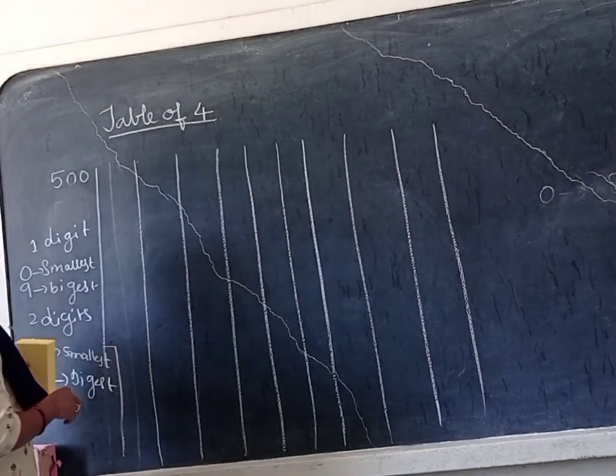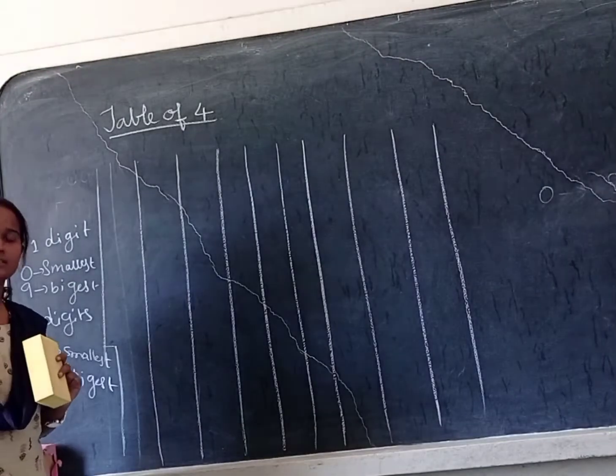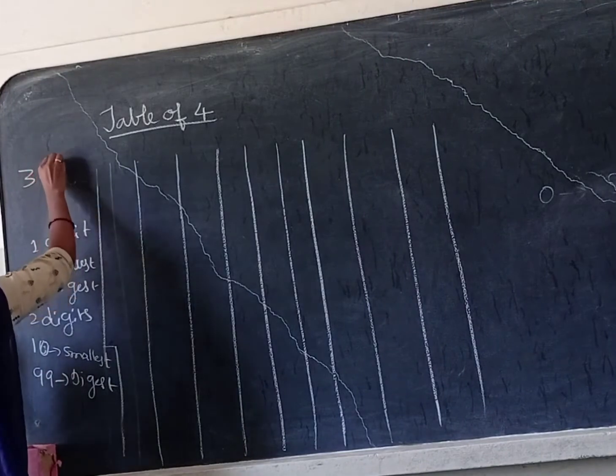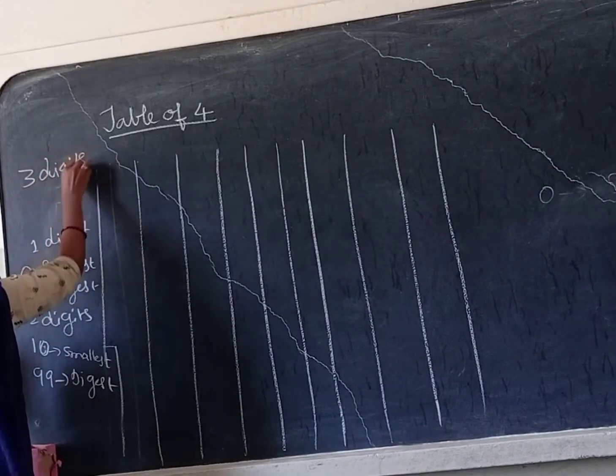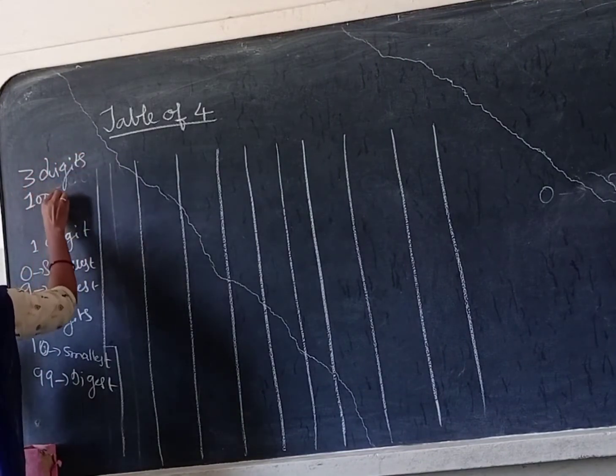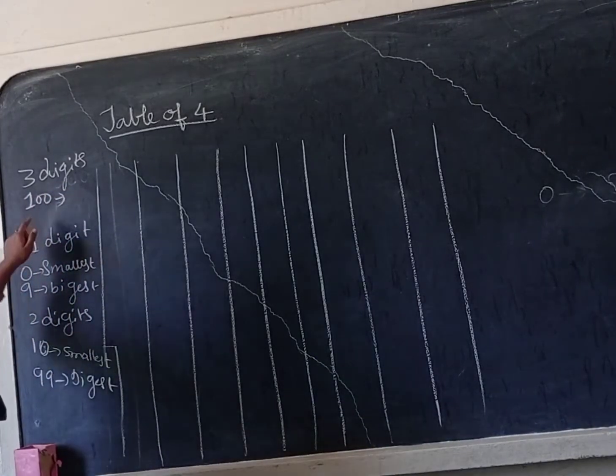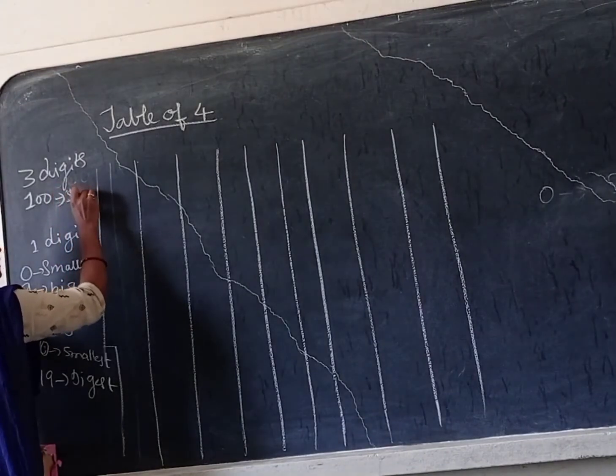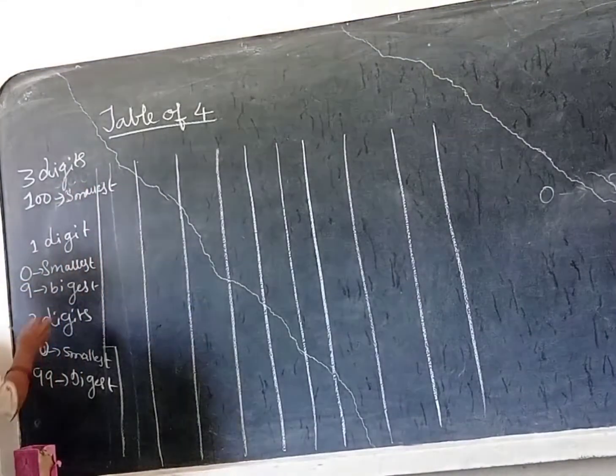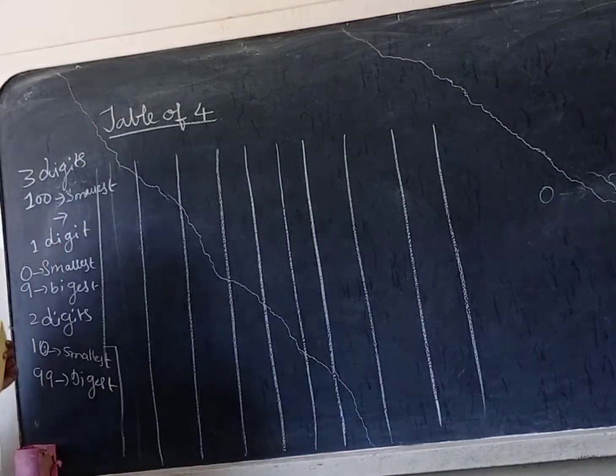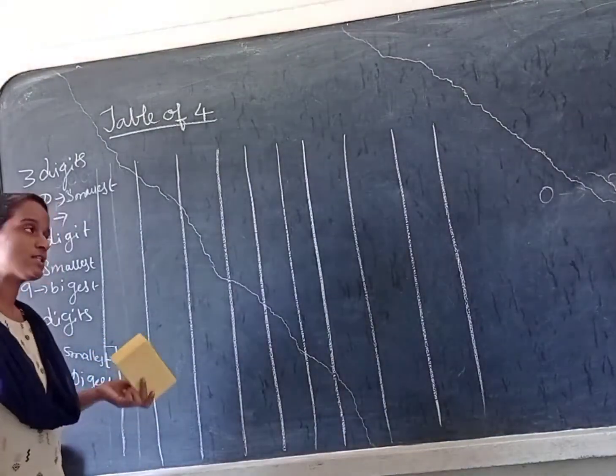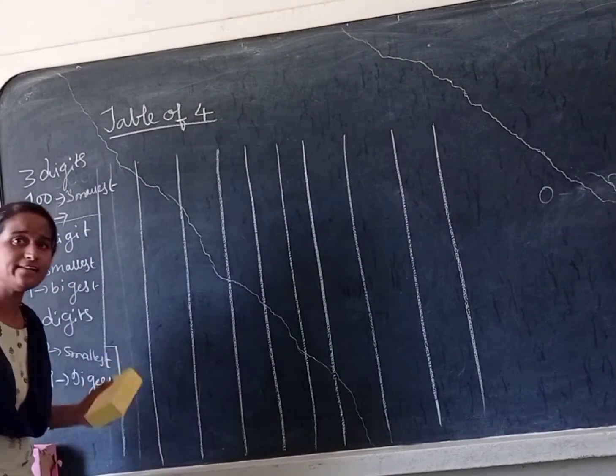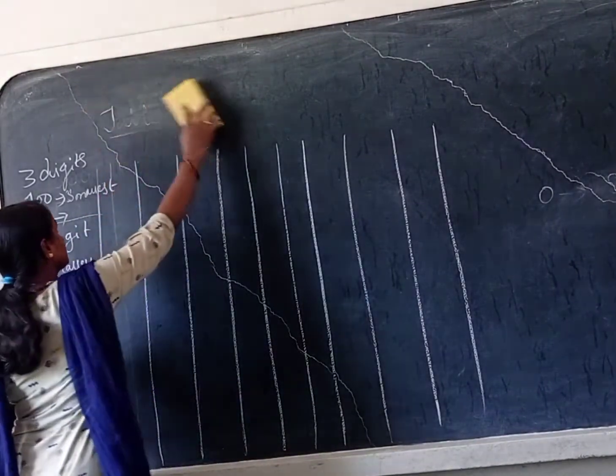We started with three digit numbers. 100 is the smallest three digit number. Three digits will start from 100. That's why this is the smallest. The biggest one, after completion of 1000 we'll write. Then only we will get to know which is the smallest and biggest number.